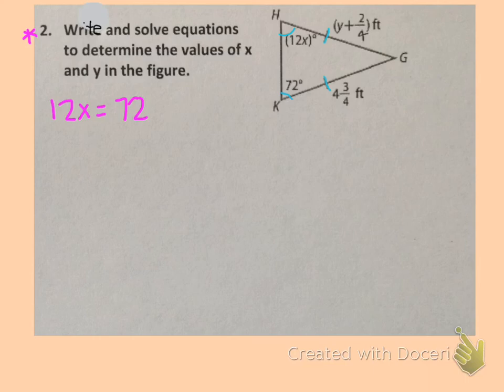And then if I look at the sides, because I know that those two sides with the tick marks are congruent, that means their measurements will equal each other. So Y plus 2 fourths equals 4 and 3 fourths. So now you have both of the equations.